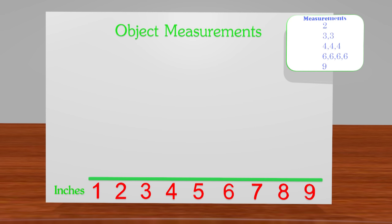So now we look at our data to help us fill in the line plot. We can see that we only had one item that measured 2 inches, so we put one x here to represent that item. We had two items that measured 3 inches, so we have two x's on top of each other to represent those two items.